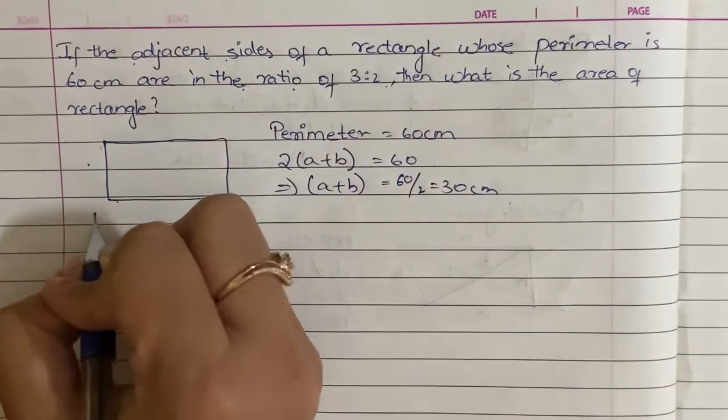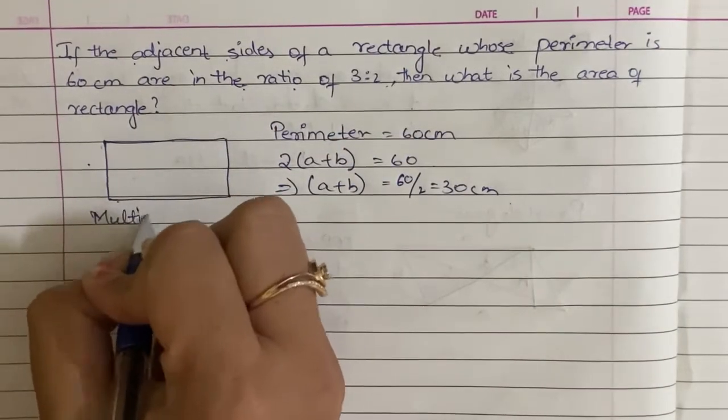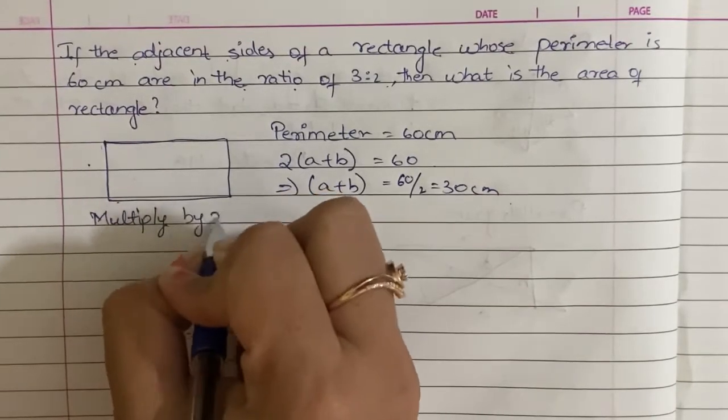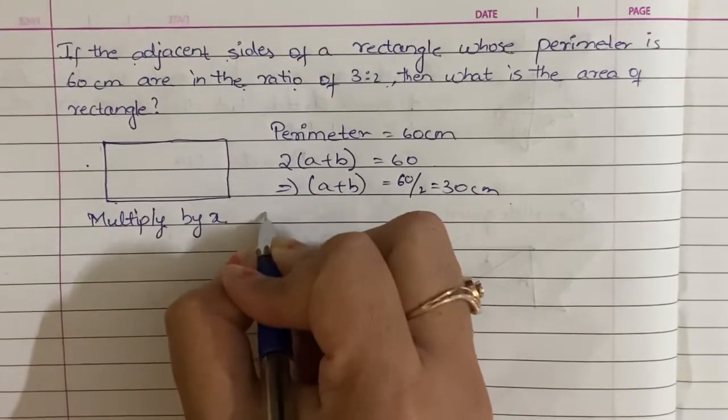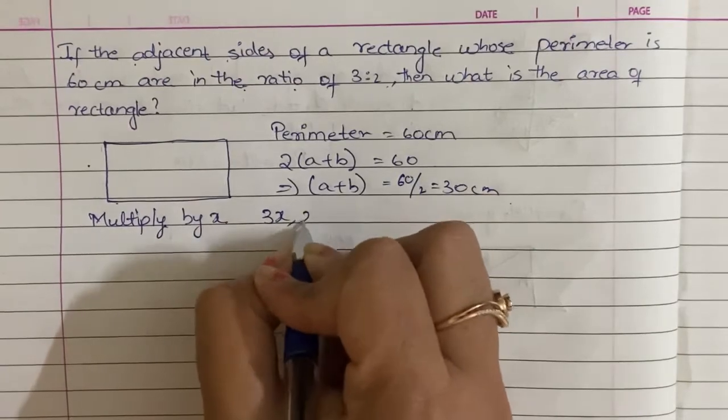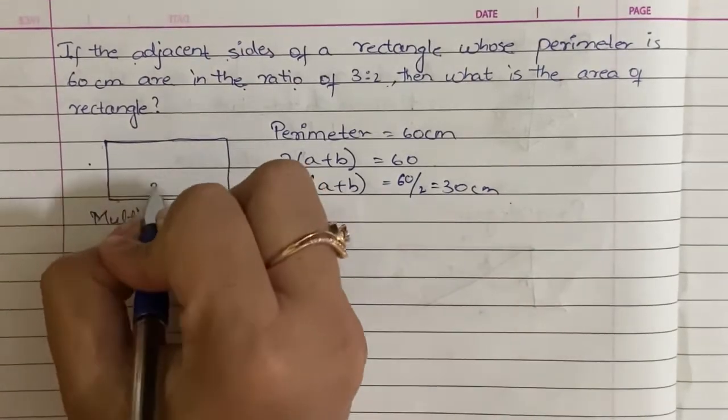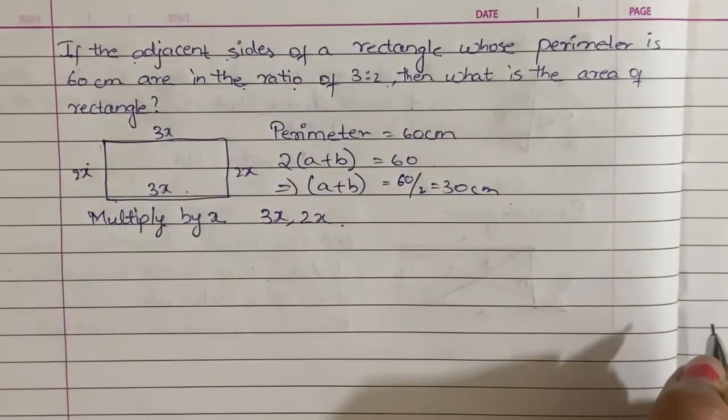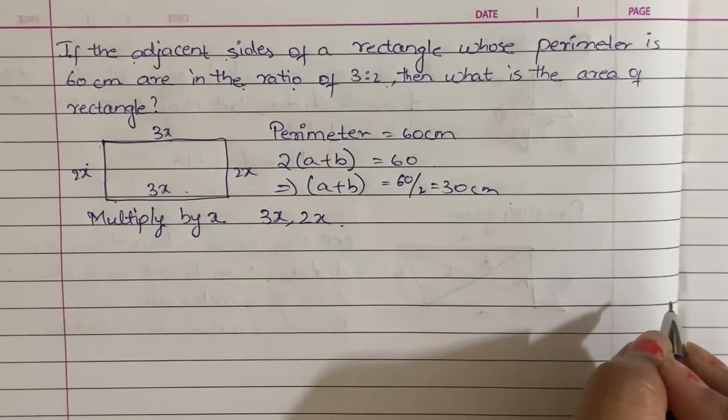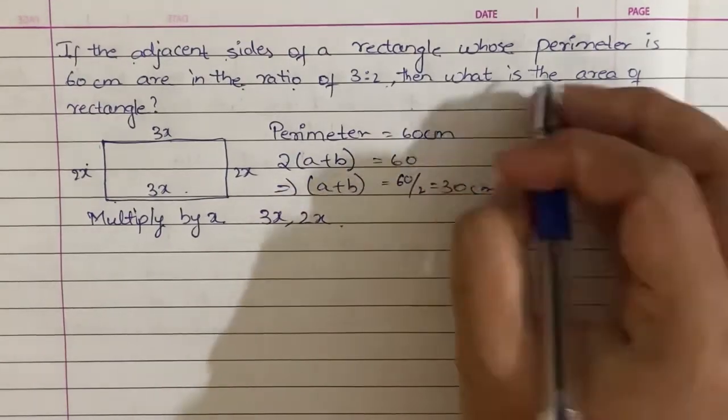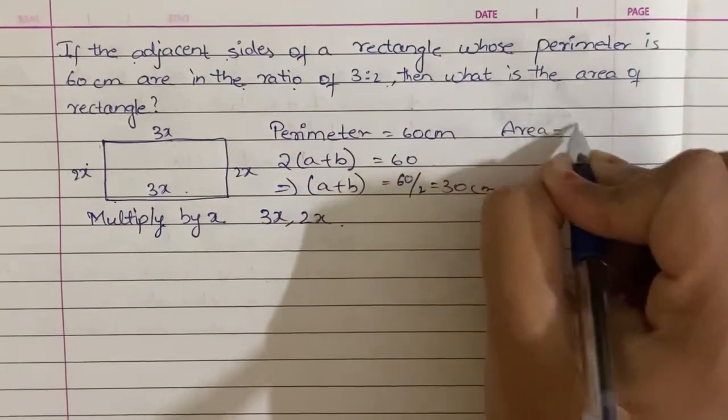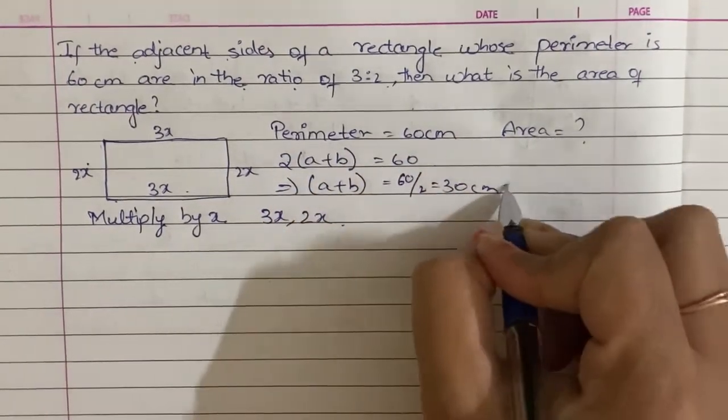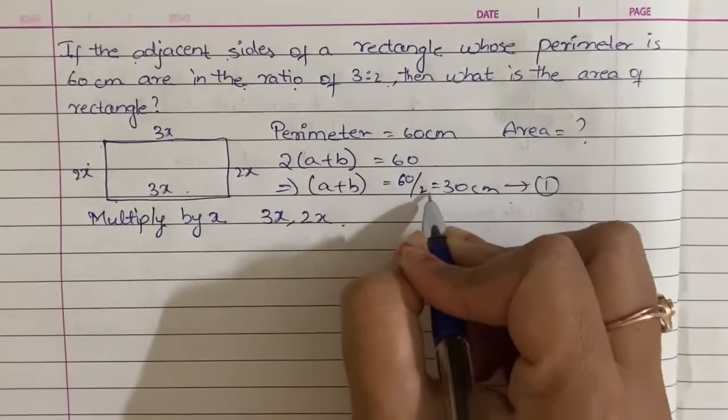When the ratio is given, multiply by x. One side is 3x and one more side is 2x. So then what is the area? We will find the area. The equation is A plus B is equal to 30. A is 3x, so 3x plus B is 2x.